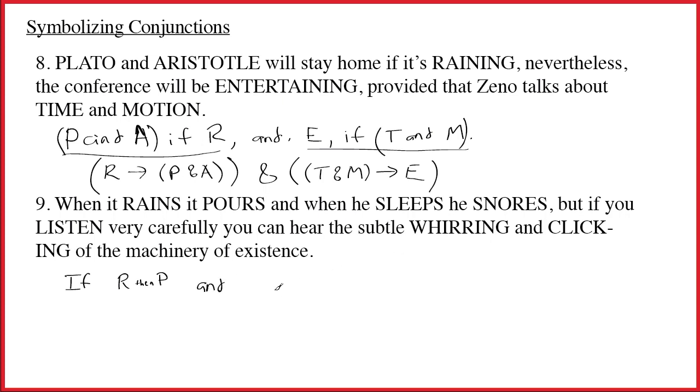And when he sleeps, he snores. Well, that's kind of just a repetition of the same thing. If S, then N. If R, then P. And if S, then N. Comma. But. And, of course, but means and. So we'll put and. If you listen very carefully, you can hear the subtle whirring and clicking of the machinery of existence. So if L, and you'll notice that there's another implied then right here. If L, then W and C.